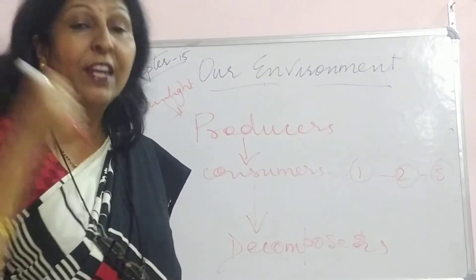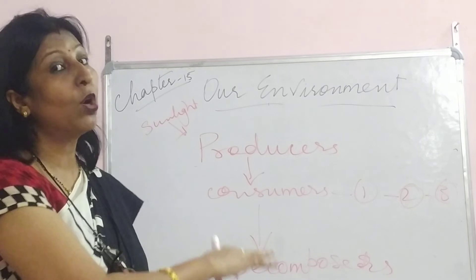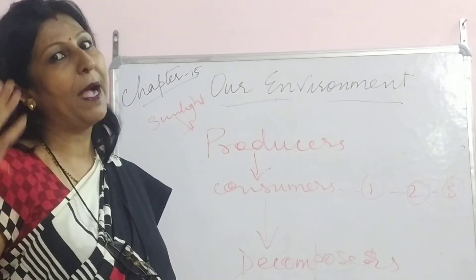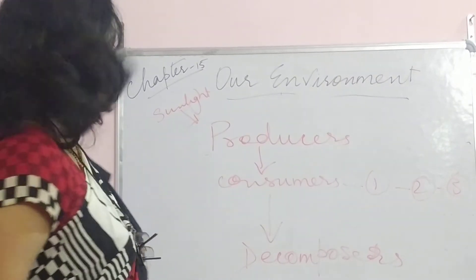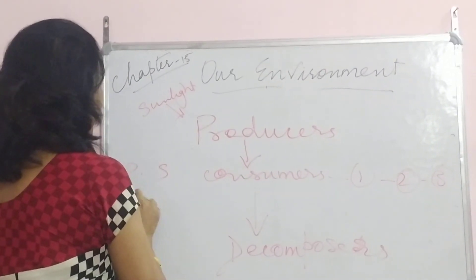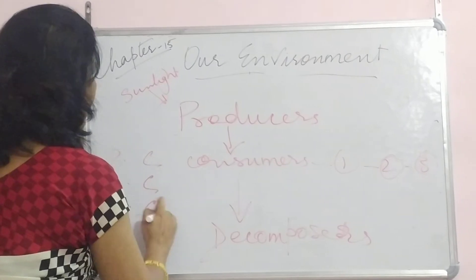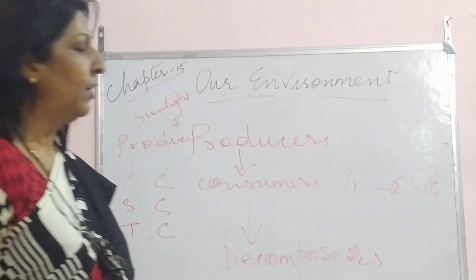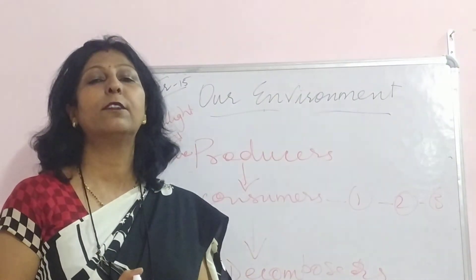I want you to be very clear about decomposers. Any doubts, do write in the comment box. I want you to watch this several times till your exam so that everything is crystal clear. To summarize: we have producers, consumers — which may be primary consumers, secondary consumers, and tertiary consumers — and decomposers. With this, we finish off the second topic.